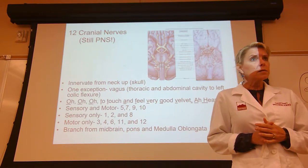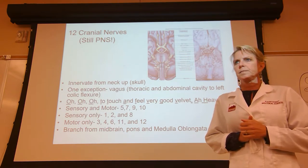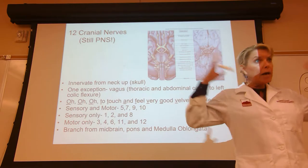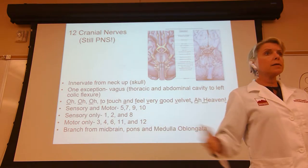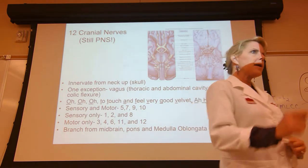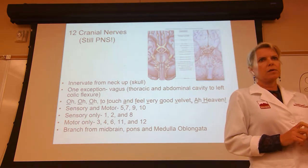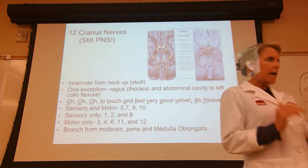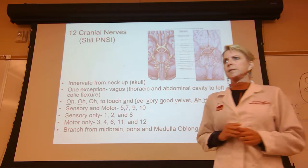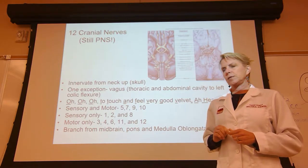Quick review: your central nervous system is your brain and spinal cord. Anything outside of that is peripheral. If you see gray matter, that means cell bodies or unmyelinated axons. If you see white matter, that means myelinated axons.